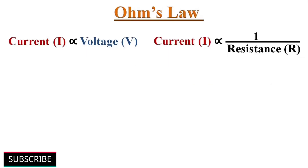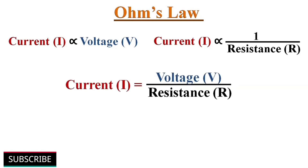So here we have two equations: current is directly proportional to voltage, and inversely proportional to resistance. Combining these two equations, we get current equals voltage divided by resistance — I equals V divided by R. This is how we can mathematically represent the relationship between current, voltage and resistance in any electric circuit.